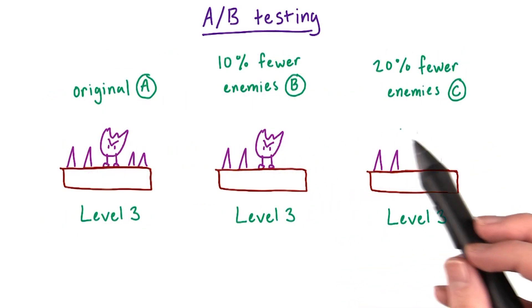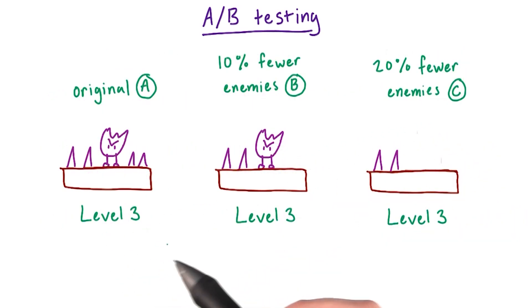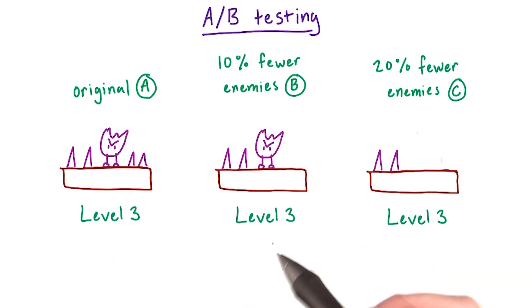So for our game, we want to change level three. Let's create three different test cases where we change the number of enemies, and see how many more players will complete the level.